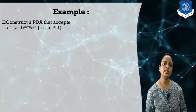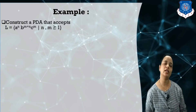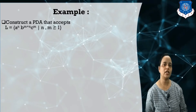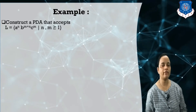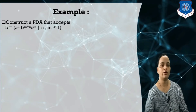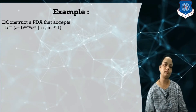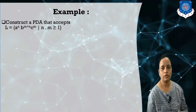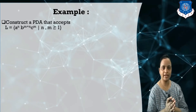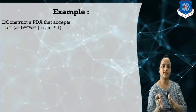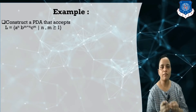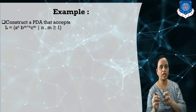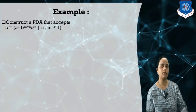In this example, we need to construct a PDA — designing a PDA for the language which accepts a^n b^(m+n) c^m, where n is greater than or equal to 1. Here we have to compare these symbols. There is a single comparison between b and a and c: the number of b should be equal to the number of a plus the number of c.